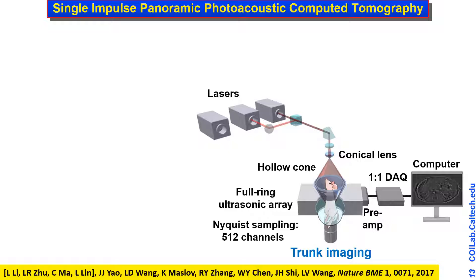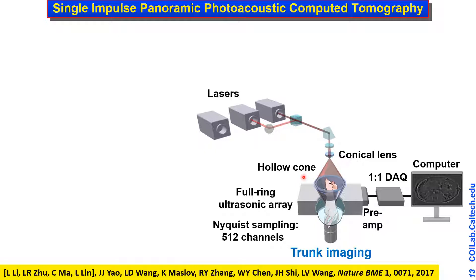The 2003 work used a single-element ultrasound transducer that took about 20 minutes to acquire a 2D cross-sectional image — too slow for many applications. We then developed a single-shot configuration using a conical lens to expand the beam into a hollow cone to deliver light to the trunk area efficiently. A full ring of transducers views the object from all possible angles for the best image quality. We follow the spatial Nyquist sampling criterion using 512 channels to minimize aliasing artifacts.